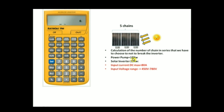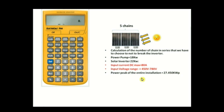We have the pump power equal to 18 kilowatts and the solar inverter power equal to 22 kilowatts. The power of the inverter must be greater than the power of the pump so it can support the pump load. According to the pump power of 18 kilowatts, we're going to need 27.45 kilowatt-peak of solar power to feed our panel. You can see how to calculate this value with Electrical Pro in the last tutorial.